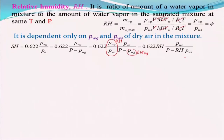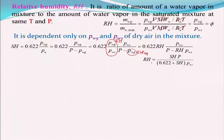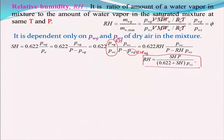Vice versa, if you know the specific humidity, you can find the relative humidity, provided you know the temperature. In the similar fashion, I can write: RH = SH × P / [(0.622 + SH) × P_ws]. That is just a rearrangement of the same relationship — nothing more. So now we need to understand the dew point temperature.